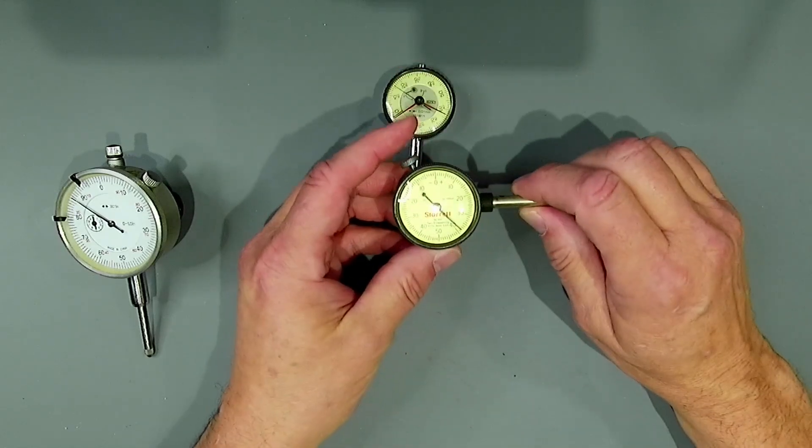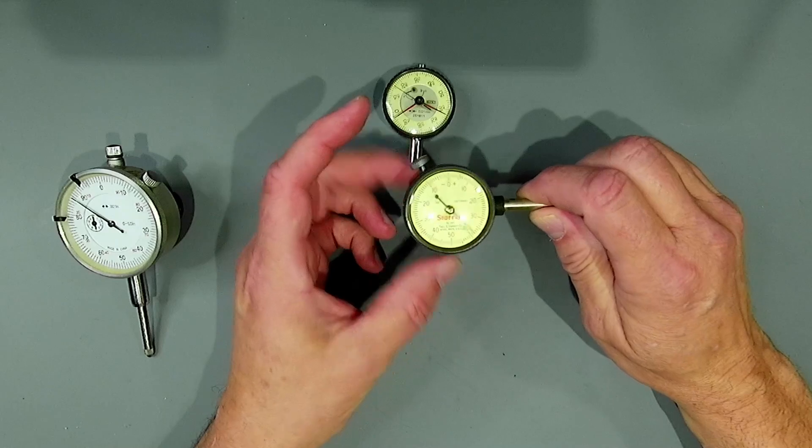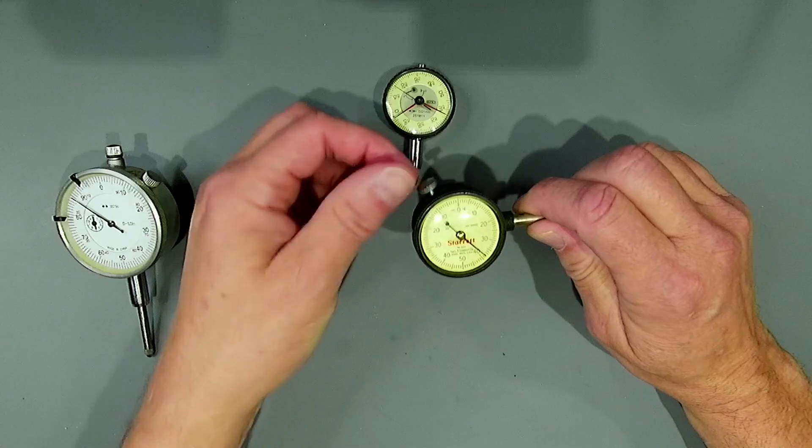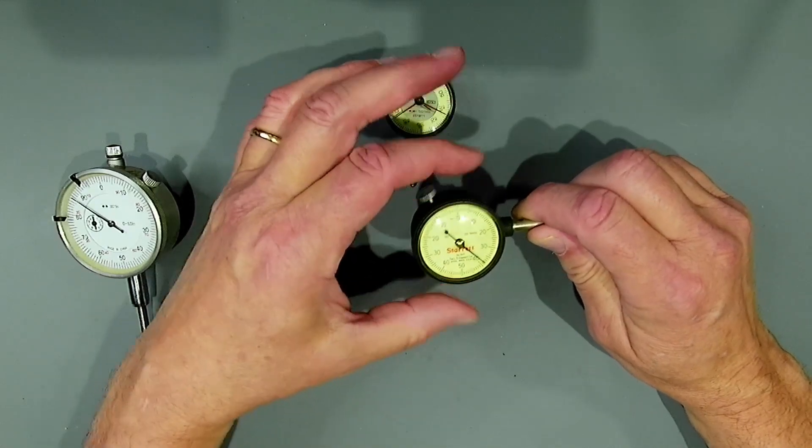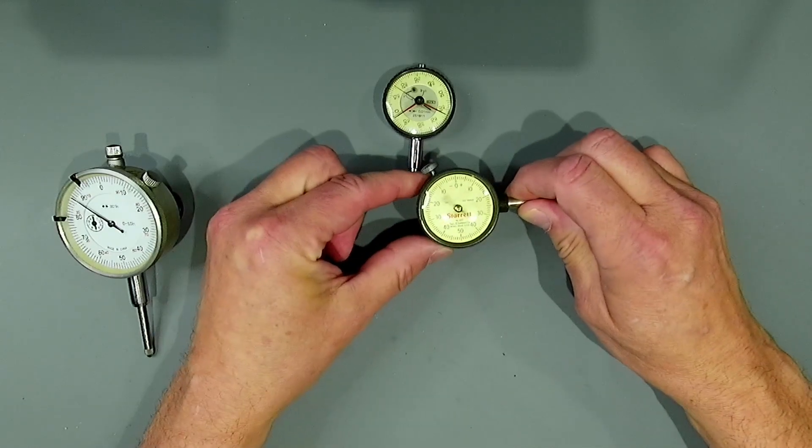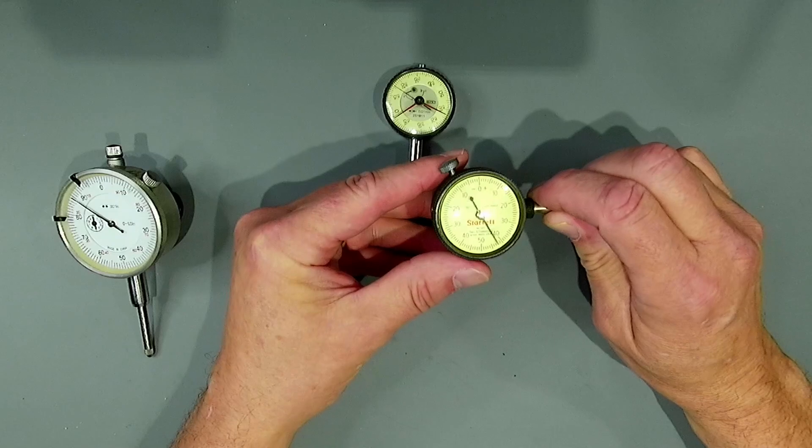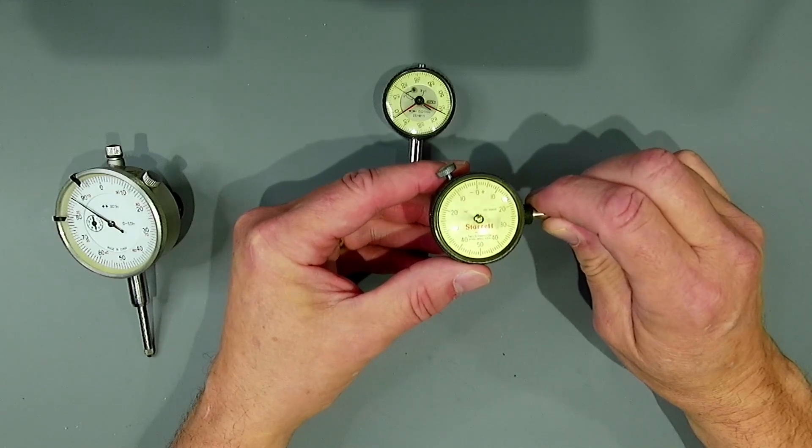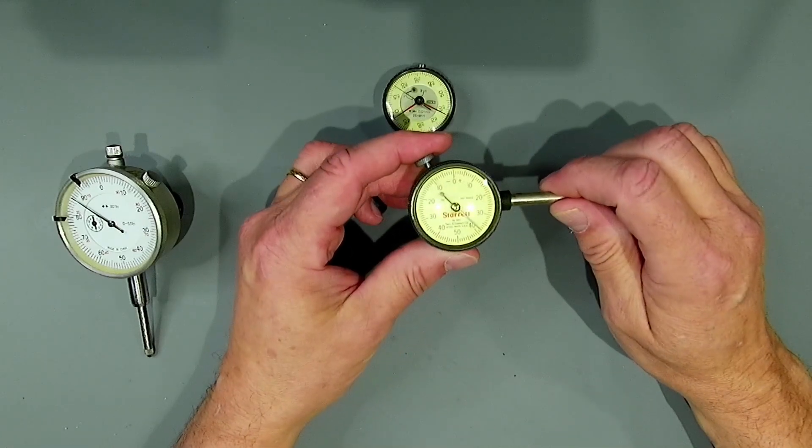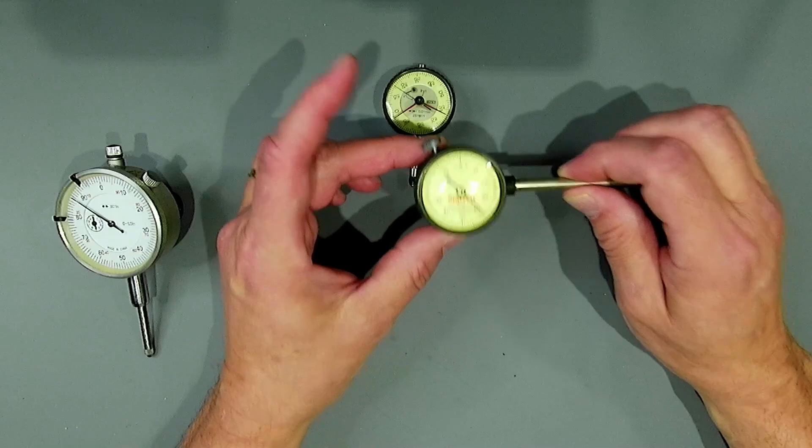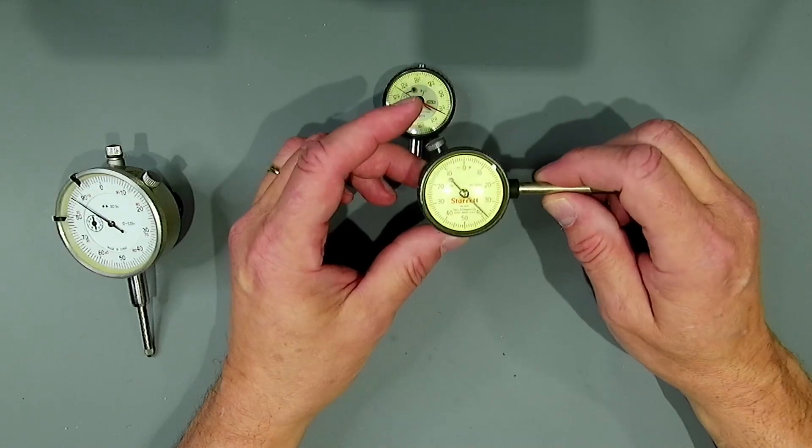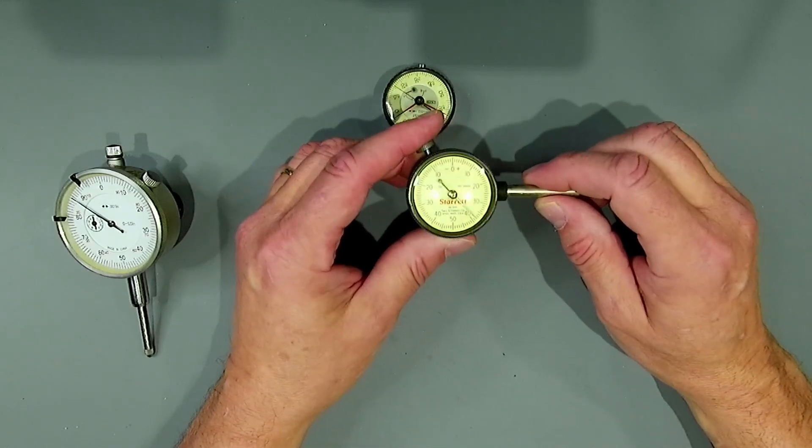This particular unit is another dial indicator, but it has a very unique feature. You'll notice that isn't the plunger. That's the lock to keep the dial from rotating. The plunger comes out the back, so you use it in this orientation. This particular model has two hundred thousandths or 0.2 inches of travel, and it is a one thousandths of an inch increment. This was my first dial indicator that I purchased close to 50 years ago, and it's served me very well throughout its lifetime.